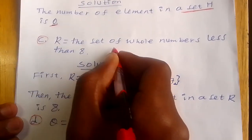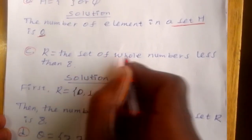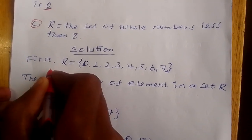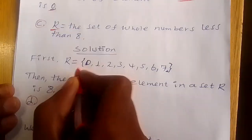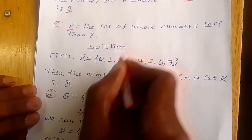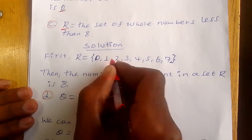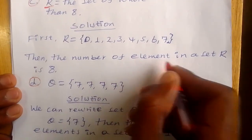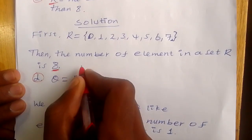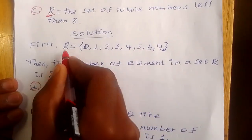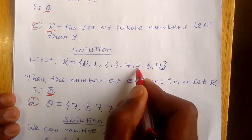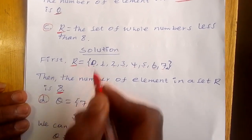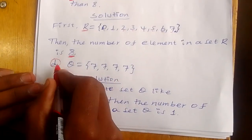Set R is equal to the set of whole numbers less than 8. Solution: we find the number of elements in set R. R contains the whole numbers: 0, 1, 2, 3, 4, 5, 6, and 7. The number of elements in set R is 8. Therefore, we have 8 elements in set R.